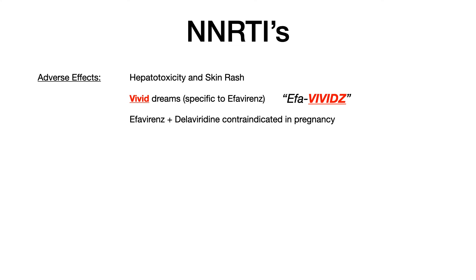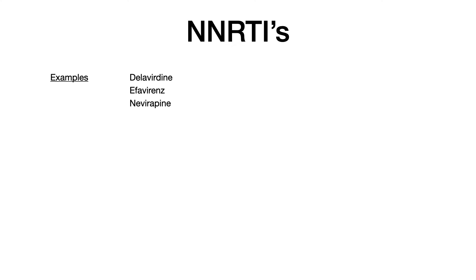There are three NNRTIs you need to know: delavirdine, efavirenz, and nevirapine. To memorize that these three are NNRTIs, use the process of elimination — if you can memorize D, E, and N as the NNRTIs, then anything not on this list and not in the future drug groups we'll cover is an NRTI. My mnemonic: my dog would go into the den and try to poop, so I'd always say 'no, no, not in the den!' The 'no, no' reminds me of the two N's for NNRTI, and DEN stands for Delavirdine, Efavirenz, and Nevirapine.